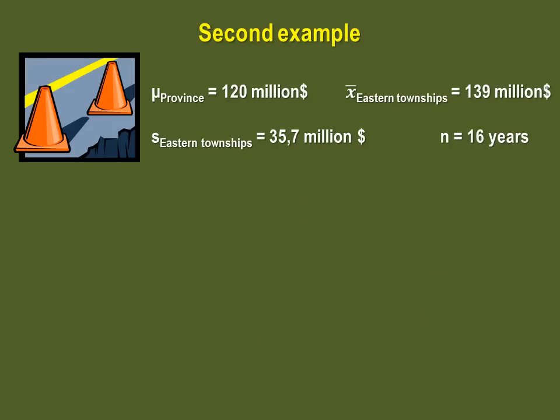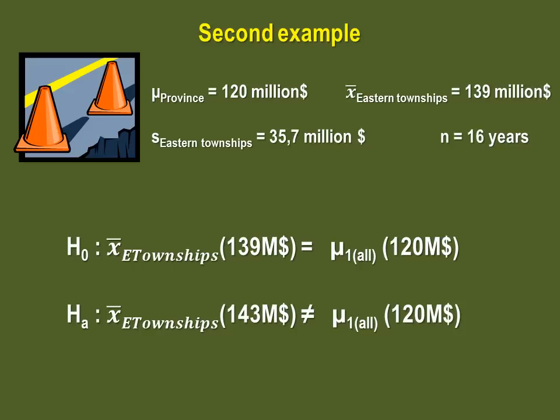Second, you must state the hypothesis. The null hypothesis is the absence of difference. So we state it like this. The eastern townships mean is equal to all of the other regions mean. The question was in the investment difference. Because there is no clue of higher or lower, so of direction, this is a two-tailed test. So your alternative hypothesis will be like this. The mean eastern townships investment is significantly different from the mean investments in all of the regions in Quebec.